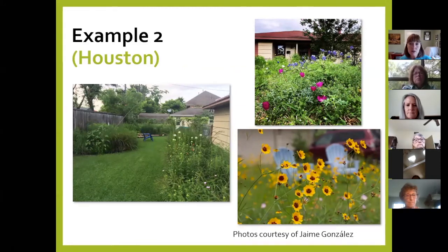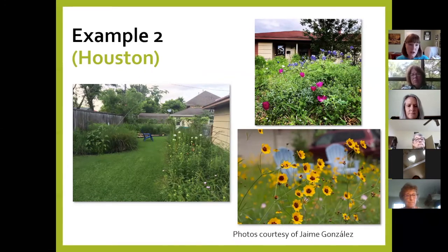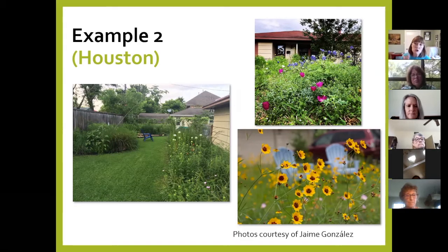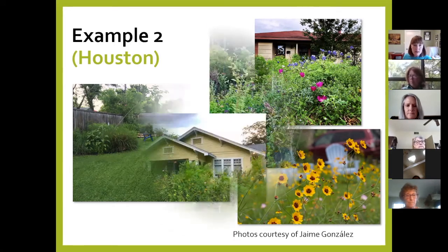This is from Jaime Gonzalez, who was with the Katy Prairie Conservancy and now with the Nature Conservancy here in Houston. This is their little home in Houston. On the left-hand side — their backyard — instead of material for the borders of his beds, he just has a sharp delineation between the garden bed with all native plants and the lawn in between. Again, it translates what's out there in our local prairie and makes it look intentional.